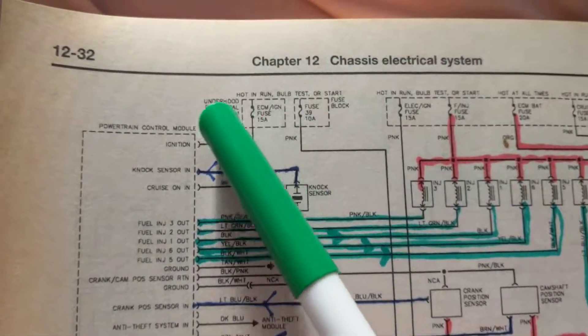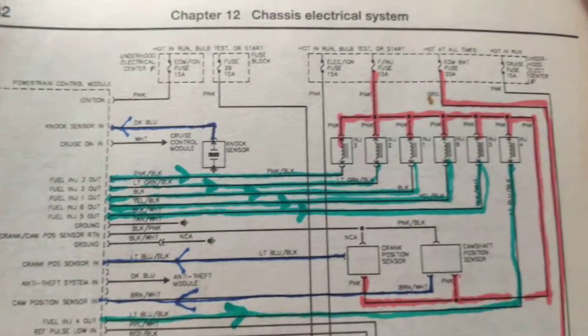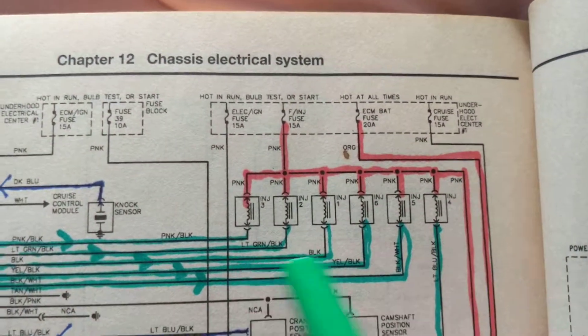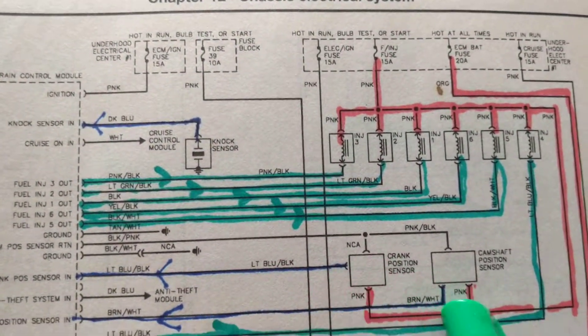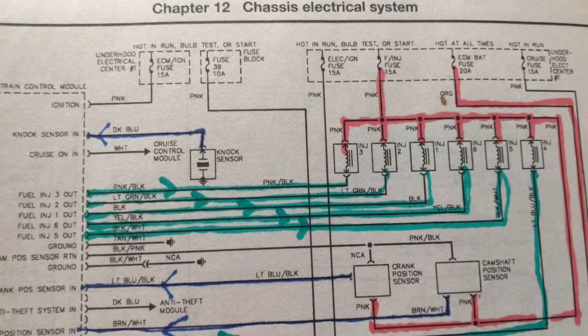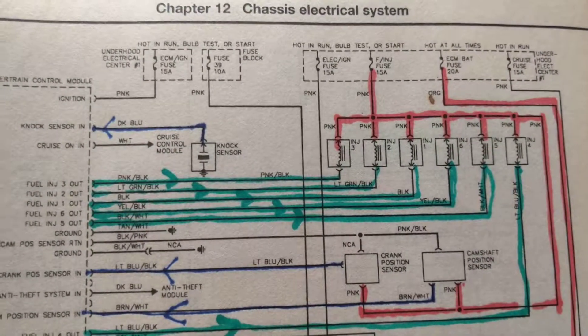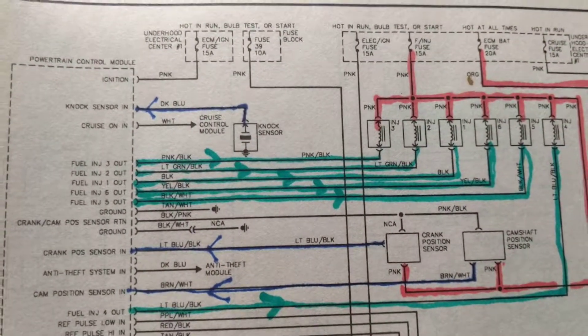But in this case we have a schematic that is pretty straightforward. We know we have fuel injectors, we know we have sensors. Sensors, like I said, are always inputs. They're giving the present information or data, what's going on, telling the engine what's going on, air temperature.